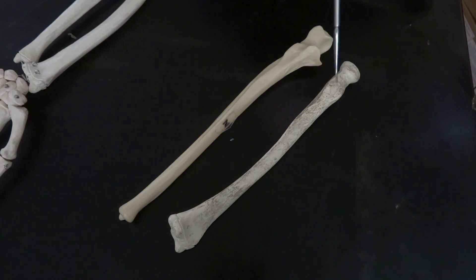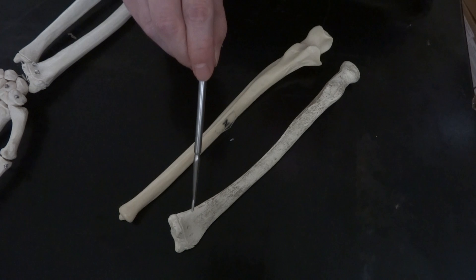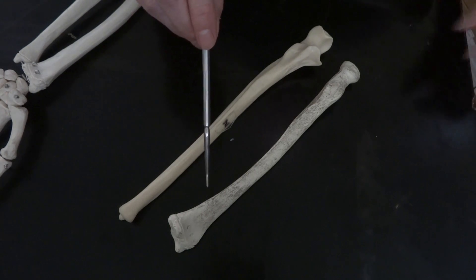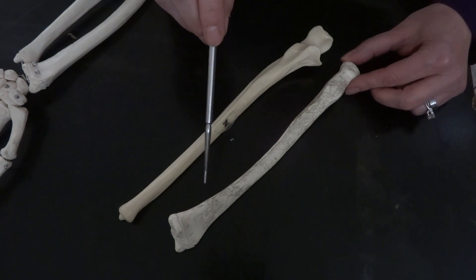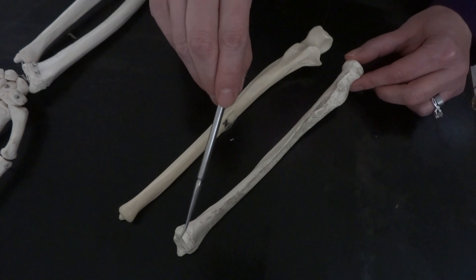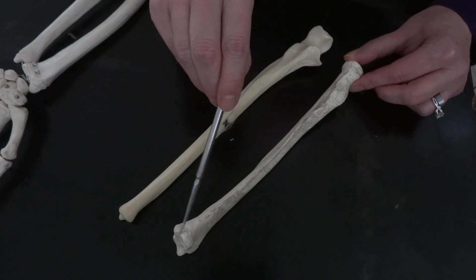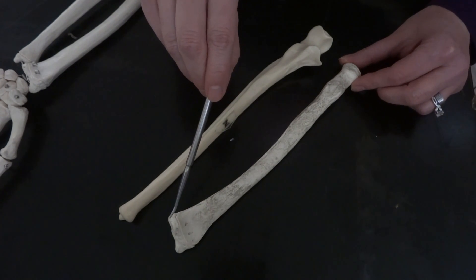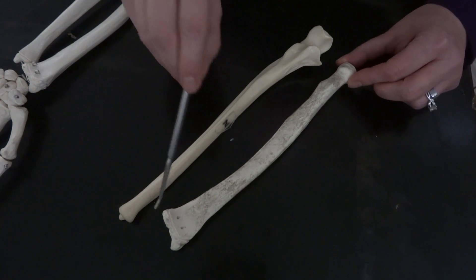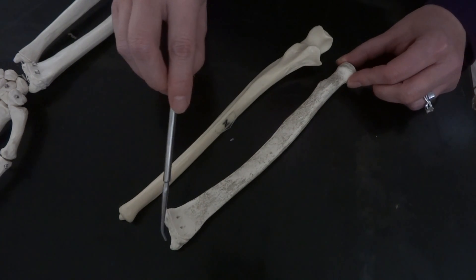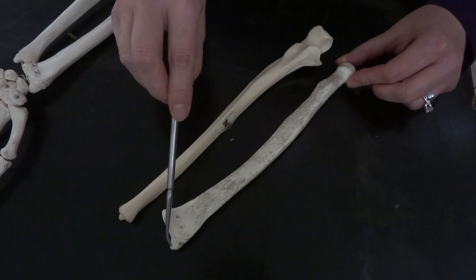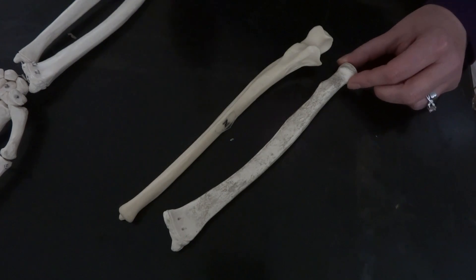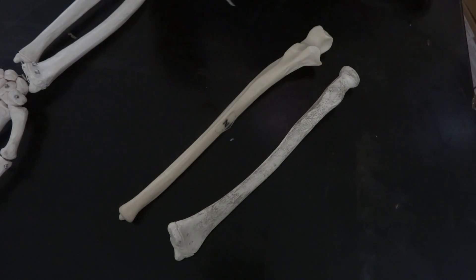And then as we go all the way down to the more distal end where it will touch the carpals of your wrist, we have the ulnar notch, which is a little groove that'll touch the ulna. And then you can see the little point at the bottom, that is the styloid process, pointy process. So those are the four for the radius.